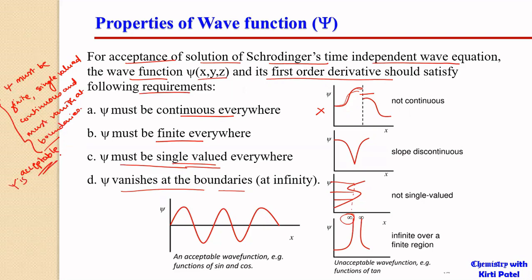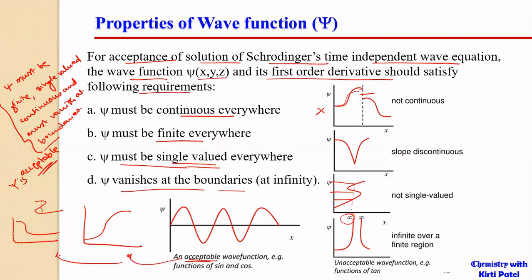If ψ satisfies these conditions then it is acceptable; otherwise, ψ is an unacceptable function. Functions that remain finite, continuous, and single-valued — giving only one value at each point — are acceptable wave functions. Functions that go to infinity, are discontinuous, or give multiple values at a single x are not acceptable. These conditions determine which are the acceptable wave functions and which are unacceptable as solutions for Schrödinger's time-independent wave equation.